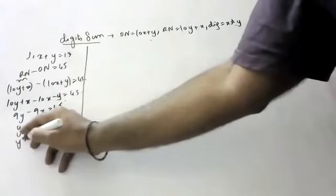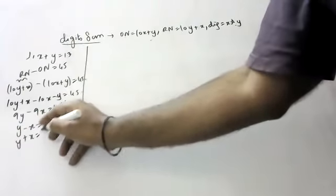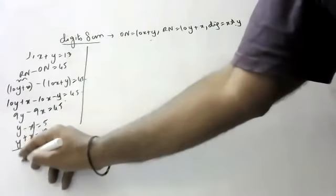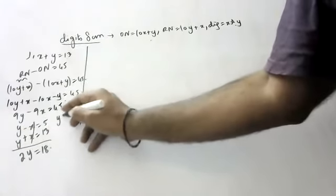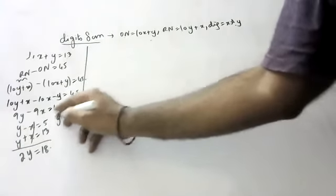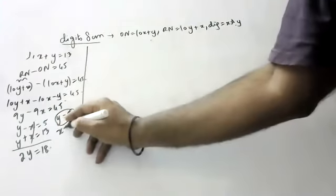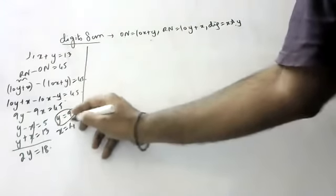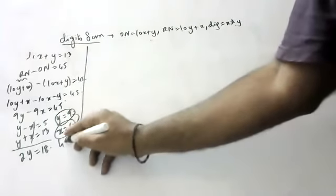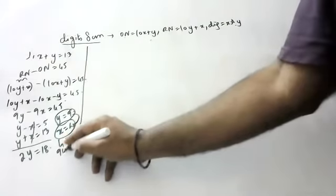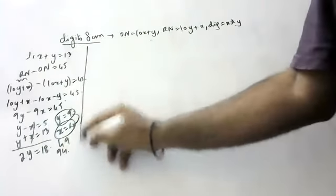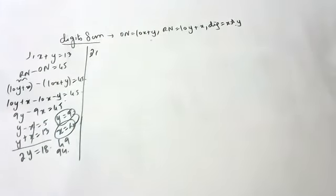Already we have X plus Y equals 30. From equations 1 and 2, X cancels, 2Y is equal to 18, so Y is equal to 9. If Y is equal to 9, then X is equal to 4. The original number is 49, reverse number is 94, and digits are 4 and 9.